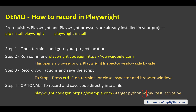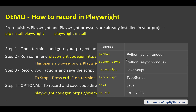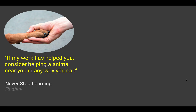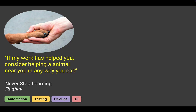Along with that, you can also select the target platform or language using `-o` and give the location of your script where you want to save it. When you run this command it will directly save your recording into the test file you have given. For the target we have Python synchronous, Python async, JavaScript, TypeScript, Java, and C#. This is how we can do recording in Playwright. I hope this was very useful — I will see you in the next session. Thank you for watching and never stop learning.